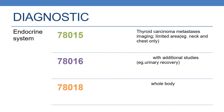Some more codes that come under the endocrine system are 78015, which deals with thyroid carcinoma metastasis imaging, limited area — for example, neck and chest only. Code 78016 deals with thyroid carcinoma metastasis imaging with additional studies — for example, urinary recovery. And the next code is 78018, which comes under thyroid carcinoma metastasis imaging, whole body.